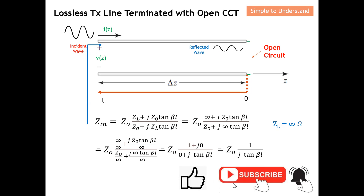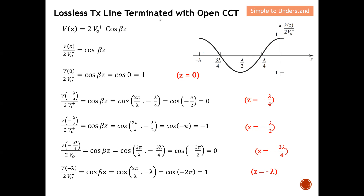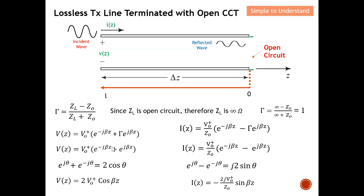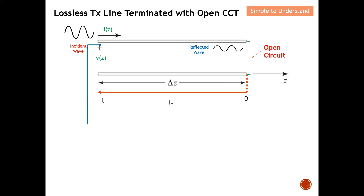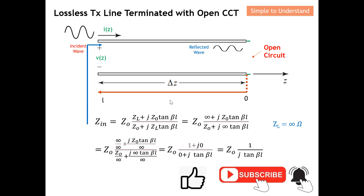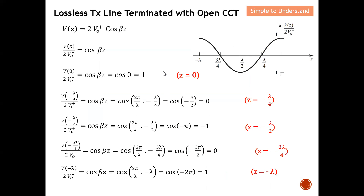Let's quickly discuss the open circuit case. This is the V(z) equation I obtained earlier. Let me quickly show it to you. This will be the first case — voltage — the second case — current — and the third case — impedance. I put them all together here. For the first case, which is voltage, this is the general equation. I move the factor 2V₀⁺ over to the left-hand side to get this equation, which corresponds to this graph shown here.